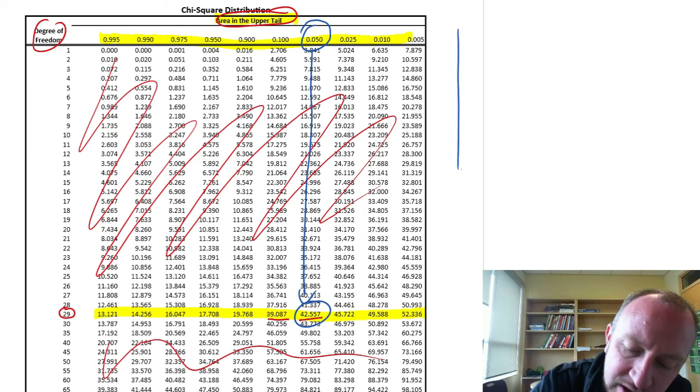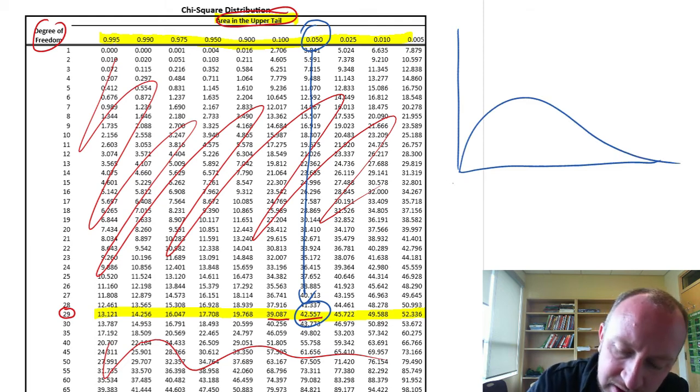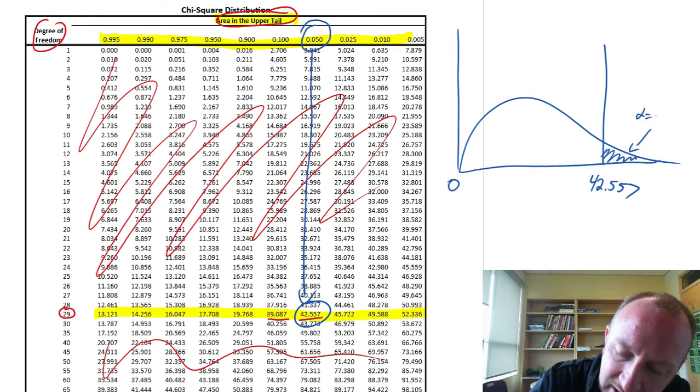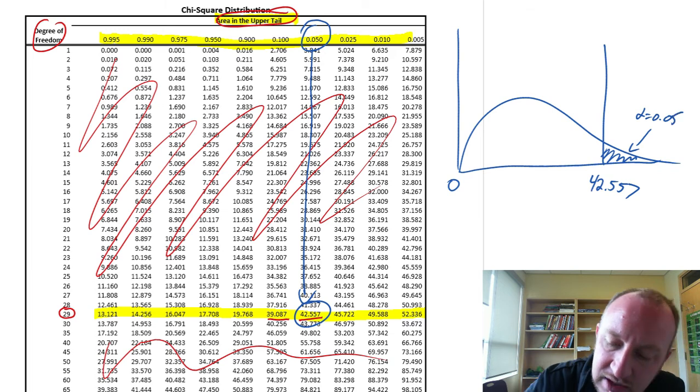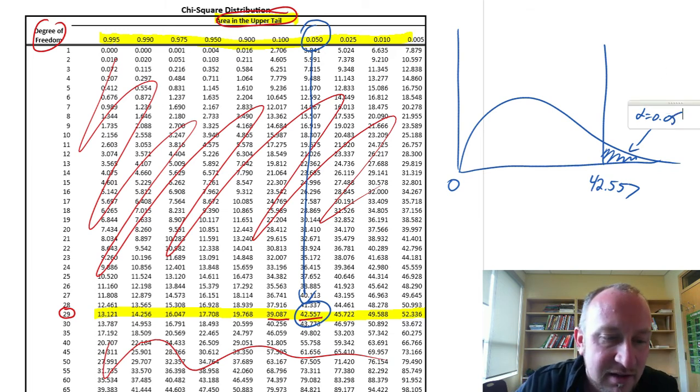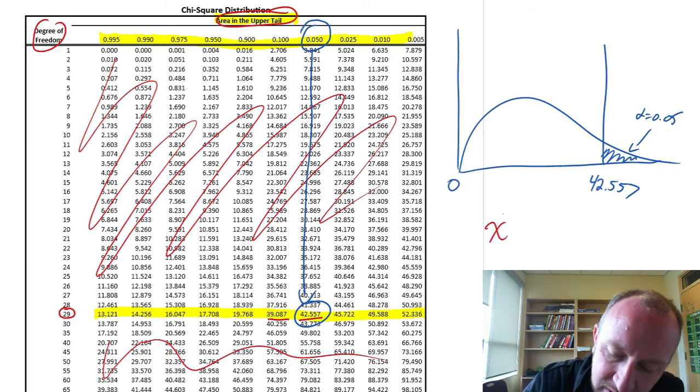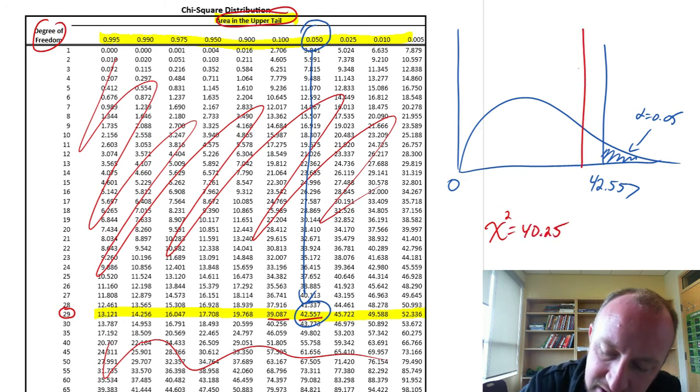Our critical value is 42.557. So here we have this chi-square distribution. We have a critical value, 42.557, that gives us that area in the upper tail equal to alpha .05. And our test statistic, our chi-squared value was 40.25. So that's down here, 40.25.